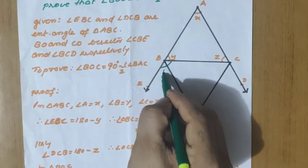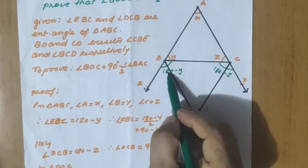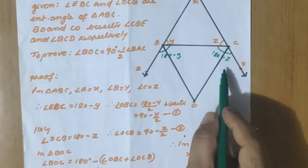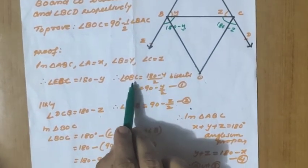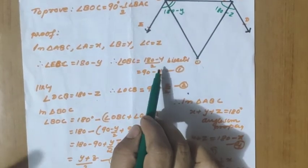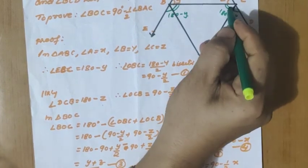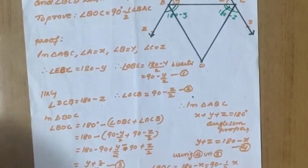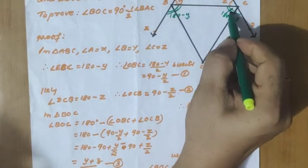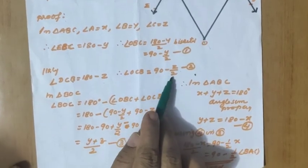If angle B equals y, then the exterior angle EBC equals 180 minus y. Similarly, exterior angle DCB equals 180 minus z. Since BO and CO are the bisectors, angle OBC equals 180 minus y divided by 2, which equals 90 minus y by 2. Similarly, angle OCB equals 90 minus z by 2. These two values are different, so we should not mark them as equal.